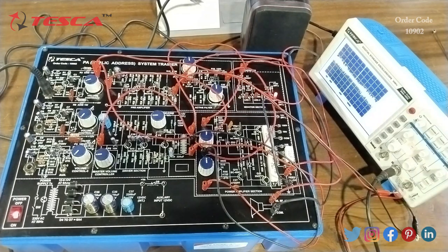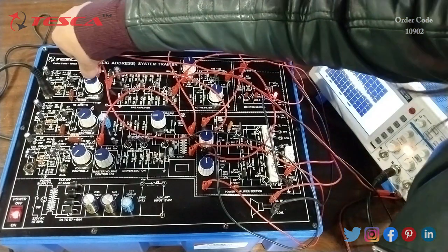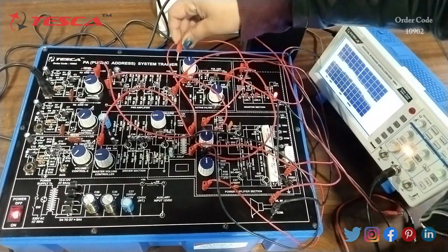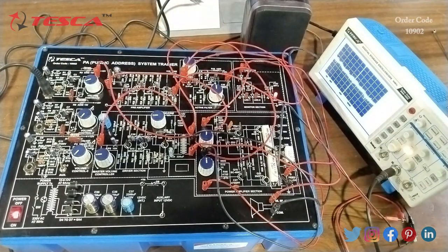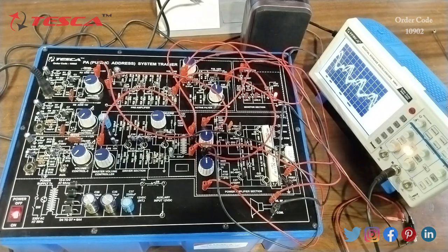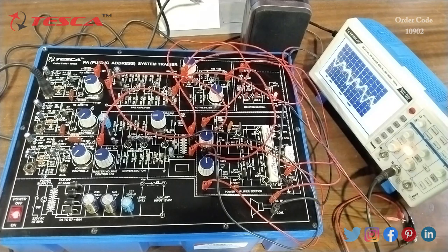Similarly, we can check the signals by connecting DSO to B, C, D. I will connect this DSO to the B. Hello, hello, hello. You can see the signal has been changed here as I am speaking. Hello, hello.